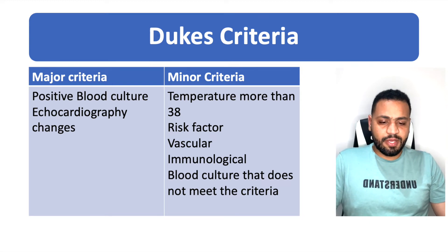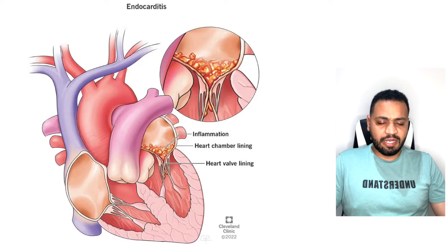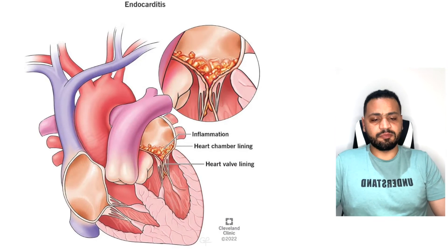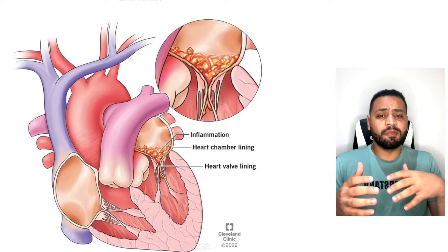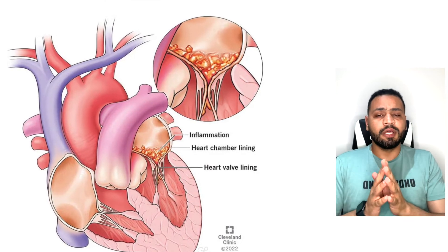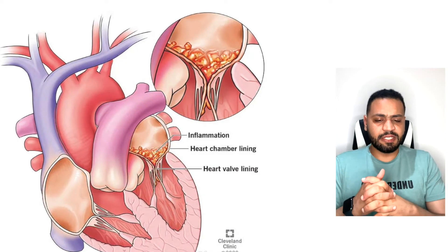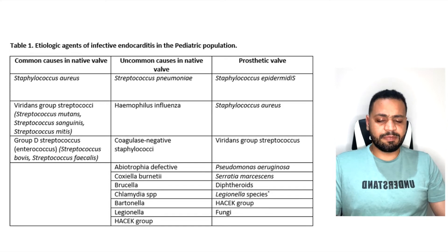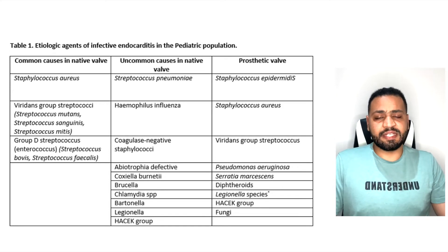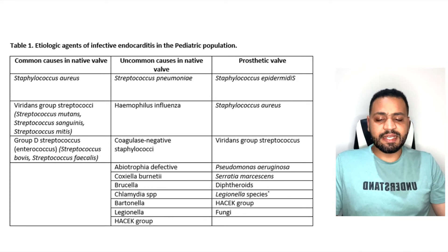Question three is why rheumatic heart valve and valve replacement patients are at higher risk. We discussed that blood usually moves very smoothly on the endocardium, and any disturbance leads to increased risk of infective endocarditis. Common microorganisms include Streptococcus viridans, Staphylococcus aureus, coagulase-negative Staphylococcus, Enterococci, and the HACEK group.